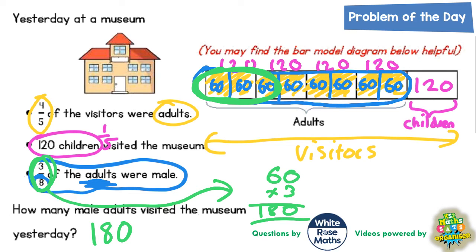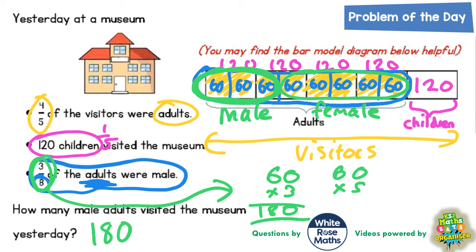You could then assume other things from that. If those were the male adults, then the other five-eighths must have been female. So the females would have been five lots of 60. Five sixties are 300, so there must have been three hundred female adults.